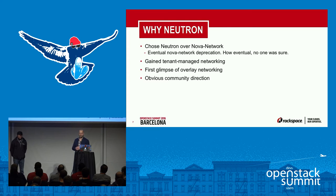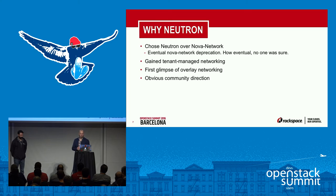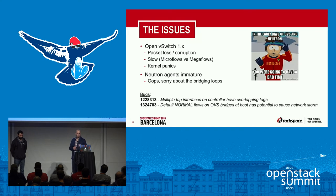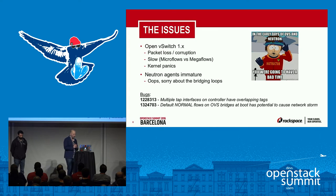Nova Network was going to be deprecated eventually — nobody knew exactly how long. Everyone was optimistic it would be six months to a year, but there are still folks using Nova Network, probably feeling the pain of having held on to that technology a bit longer than needed. Some of the issues we encountered in that initial phase of our private cloud were the immaturity of Open vSwitch at the time and the immaturity of Neutron itself.